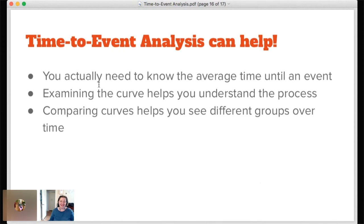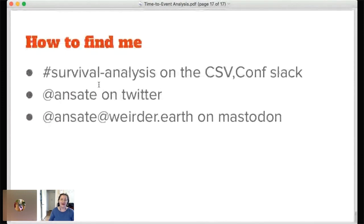Time to event analysis is pretty cool. You can use it. It can help you out. You can find the average time to an event but that's not all. You can actually understand the process and get some data about how long different portions of time last. And perhaps most excitingly you can compare different groups and make business decisions based on which of them are more likely to hit those events and how frequently. Thanks for listening to me. You can find me on the survival analysis channel on the CSV conf Slack. I'll still be in the Q&A channel like everybody else. I'm Anteit on Twitter and I'm Anteit Weirder Earth on Mastodon.